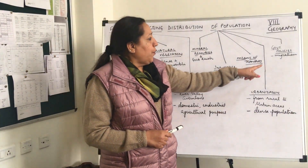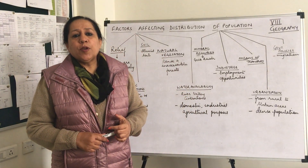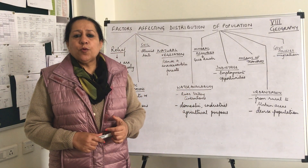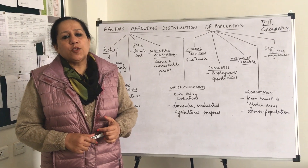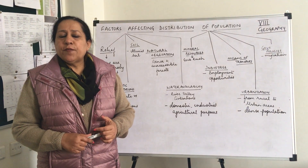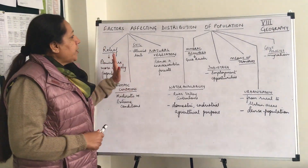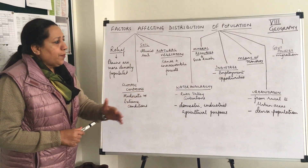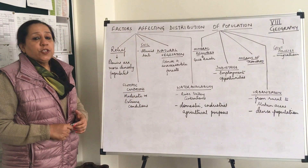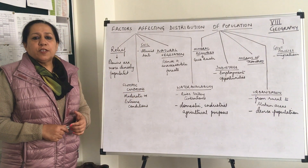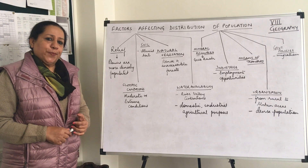Last of all, government policies. Certain government policies have also led to the migration of people from one area to another, or even from one country to another. So these are the main factors which affect the distribution of population in a particular area. Thank you.